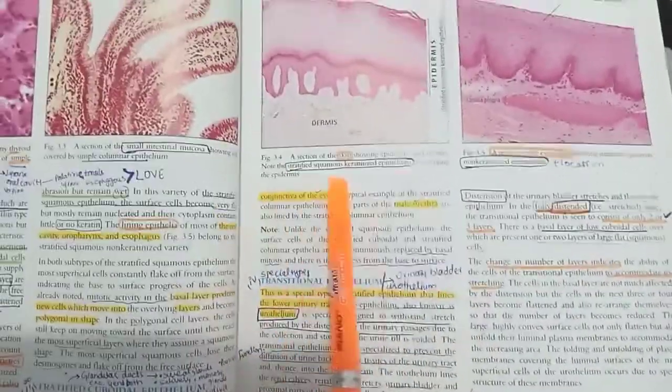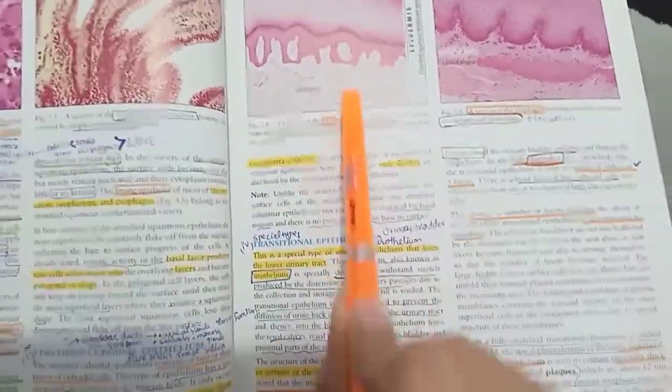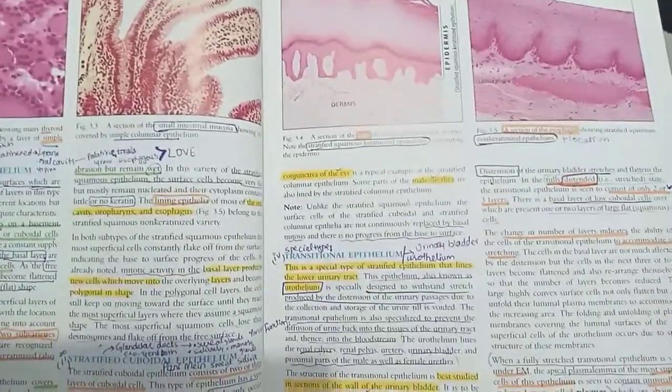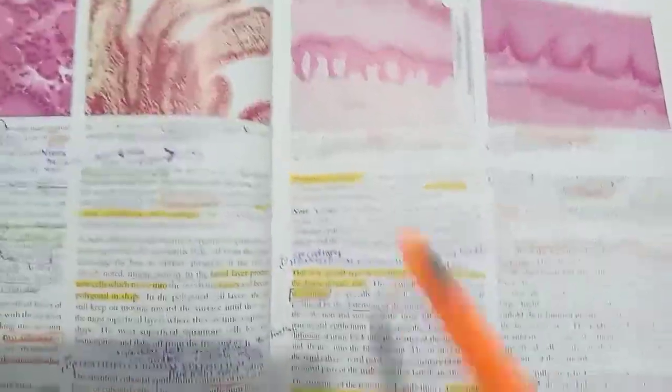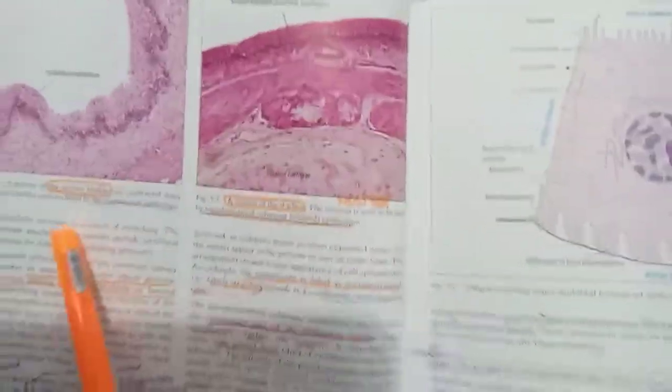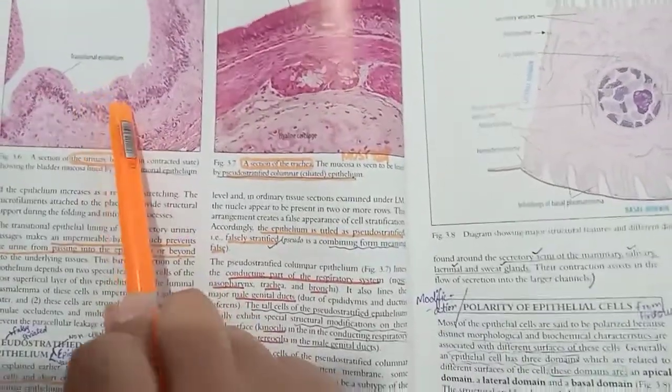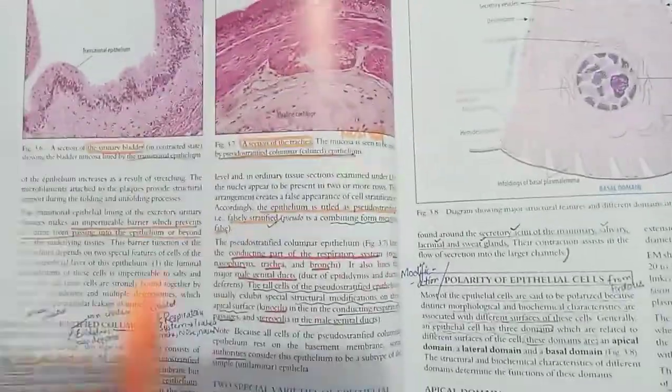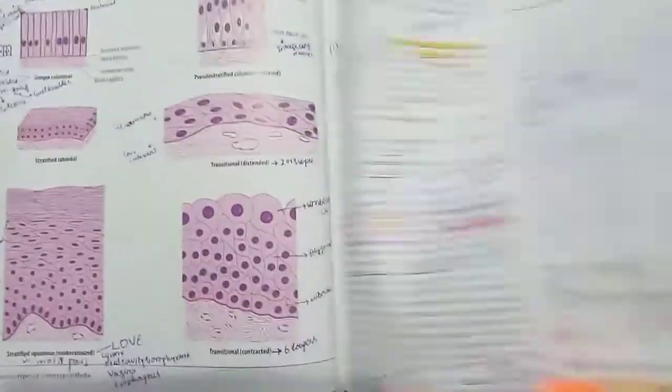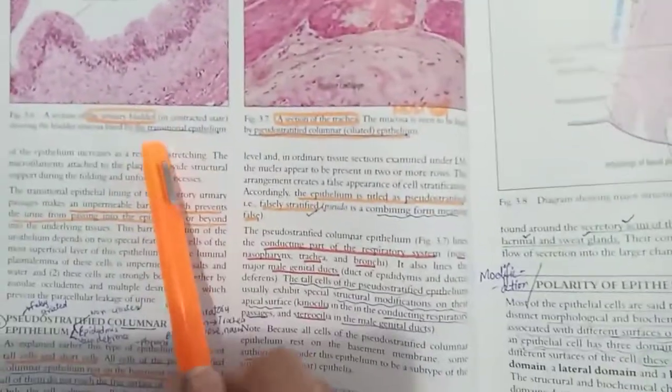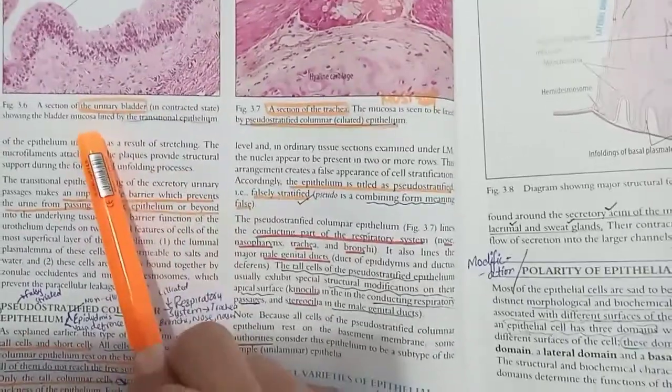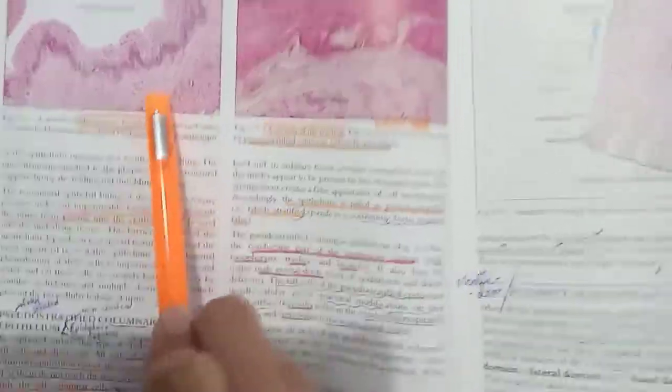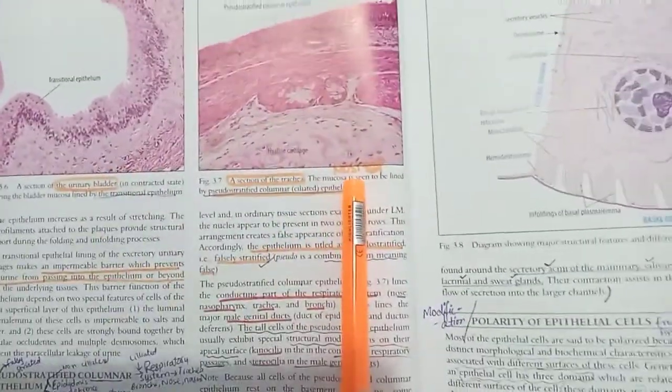Skin is important to see - stratified squamous keratinized epithelium and non-keratinized epithelium. This is the histology book practical copy. It's important to ask about transitional epithelium. This is called the diagram. If you have to ask bladder mucosa accordingly, we can explain this diagram.